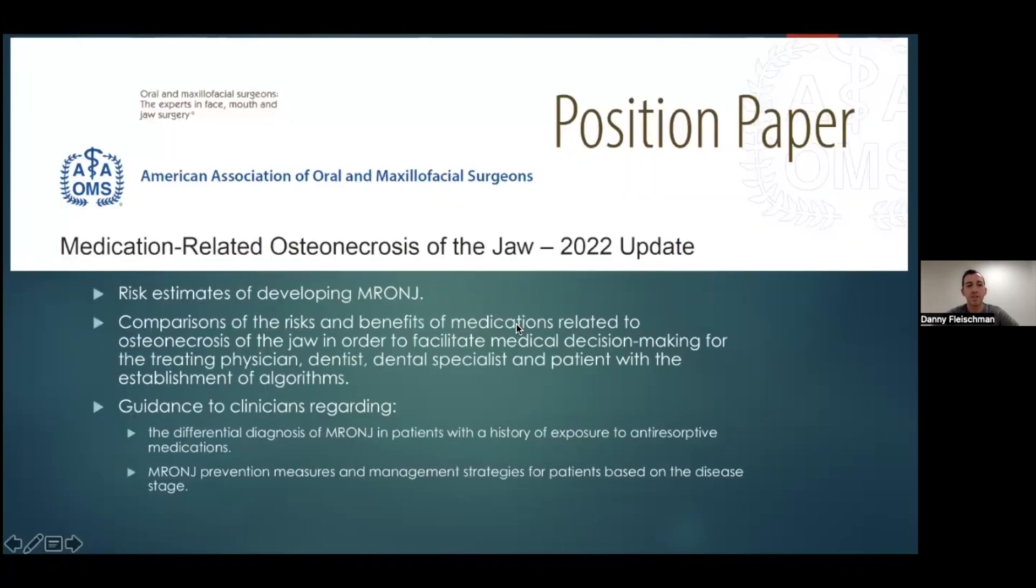So every few years, the American Association of Oral and Maxillofacial Surgeons comes out with position papers about different topics. And every few years, they come out with a position paper on osteonecrosis of the jaw. They came out with one in 2007, then again in 2009, 2014, and this is the most recent one from 2022.